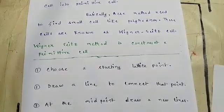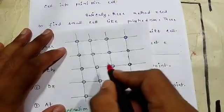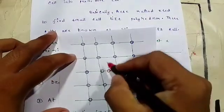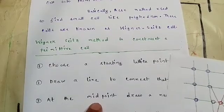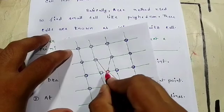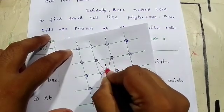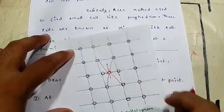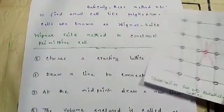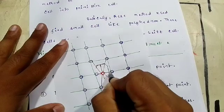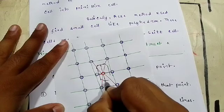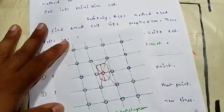To construct a primitive cell using Wigner-Seitz's method, first choose a starting point. Here is the diagram. I am choosing a starting point — I choose this point. Second step: draw a line to connect that point to neighboring points. At the midpoint, draw a new perpendicular line. The volume enclosed by these lines is called the Wigner-Seitz cell.